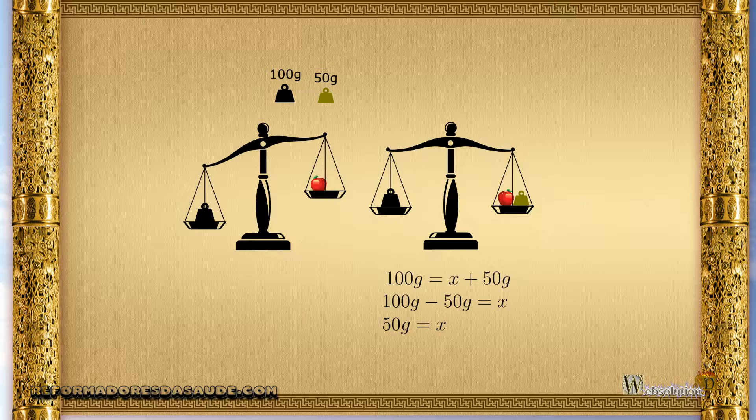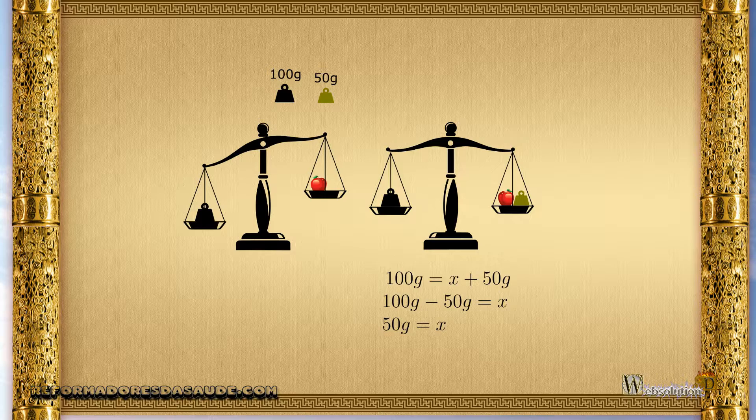In this case we can write 100 grams equals fruit x plus 50 grams. Now we cannot break the weight of 100 grams in 2 to remove 50 grams from both sides, but we can solve the equation. Solving the equation, we have that fruit x weighs 50 grams. See that the basic rule of the equation is to match two things to get information we don't know.